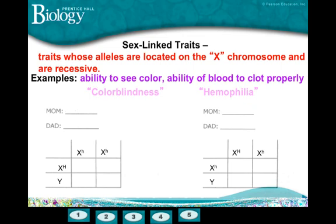Let's study hemophilia. We're going to use an H to make it easy to see. Let's cross a hemophiliac female — she has inherited both homozygous recessive alleles on her X chromosomes — with a male who is completely normal, meaning he inherited the dominant allele. When I do that cross, I get four possible offspring results.